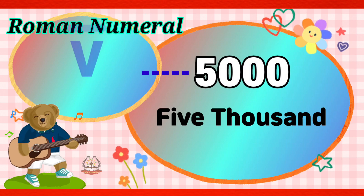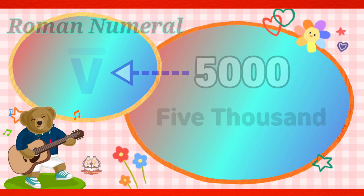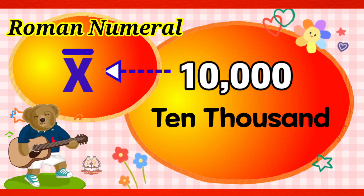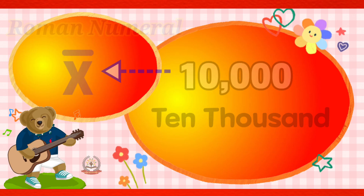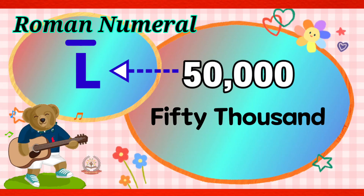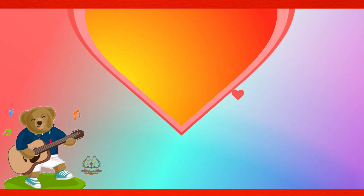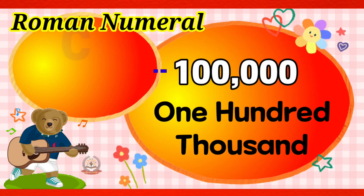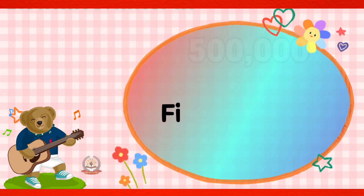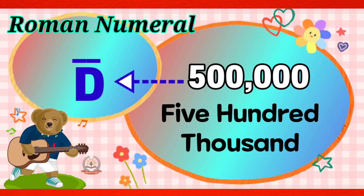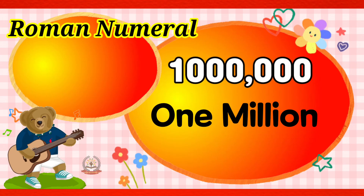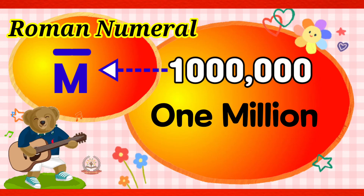5,000 is V with 1 bar at the top. 10,000 is X with 1 bar at the top. 50,000 is L with 1 bar at the top. 100,000 is C with 1 bar at the top. 500,000 is D with 1 bar at the top. 1,000,000 is M with 1 bar at the top.